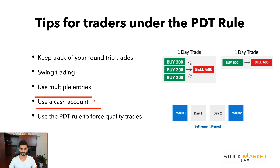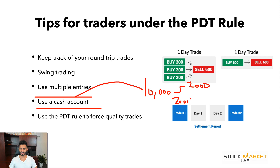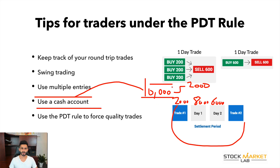Another way to work under the PDT rule is to use a cash account. For example, if you start with ten thousand dollars and can't reach twenty-five thousand, you break it down — say two thousand dollars per trade. After using two thousand dollars on a given day, it will settle on the third business day, but in between you still have eight thousand available. If you use two thousand again the next day you'll have six thousand. Your cash is still available but takes three days to settle. With a smaller account you won't be able to scalp — you can day trade one or two times depending on your capital.